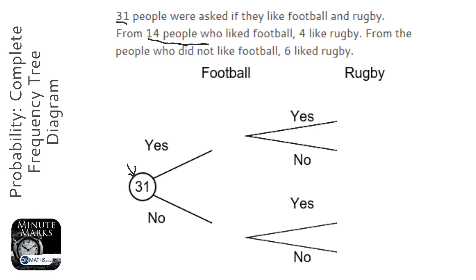From 14 people who liked football, so it means that there were 14 people who liked football, it says 4 like rugby. So there's 4 that like rugby, that means that there's 10 that don't like rugby, because there's 14 people who like football.